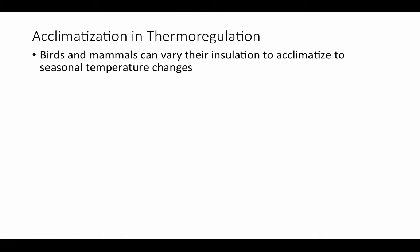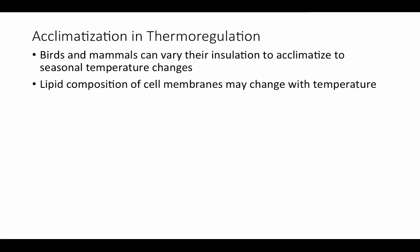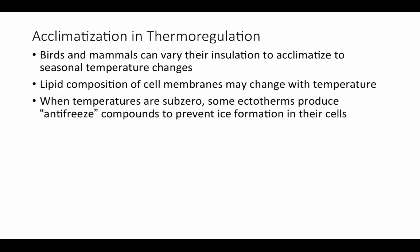Birds and some non-avian reptiles can also raise body temperature through shivering. As an acclimatization response, birds and mammals can vary their amount of insulation seasonally — dogs shed their winter fur in summer and grow it back in fall. The lipid composition of cell membranes may also change with temperature: more unsaturated lipids are added when colder to improve fluidity, and more saturated lipids when hot to prevent membranes from becoming too fluid and fragile. Some ectotherms produce antifreeze compounds below zero to prevent ice crystal growth in cells.